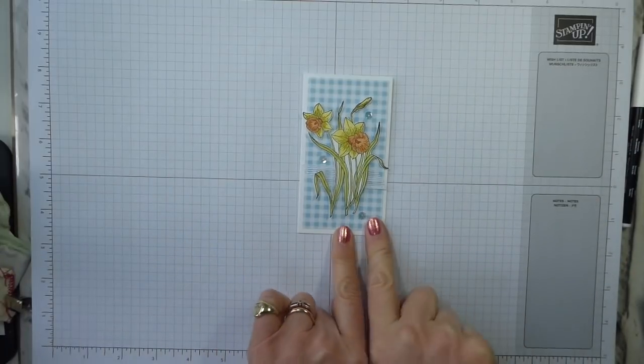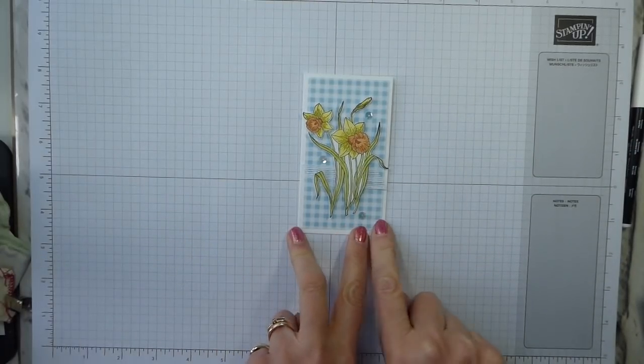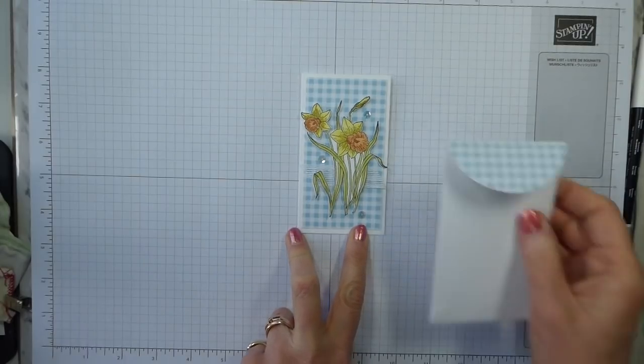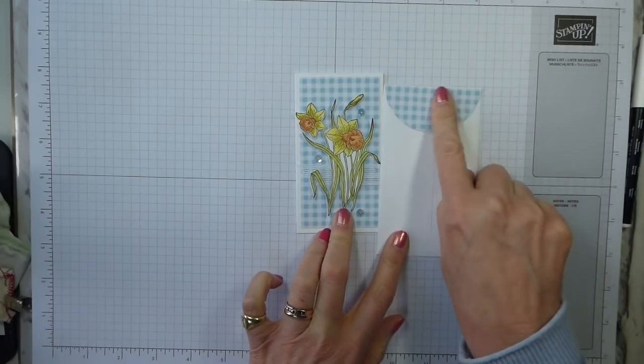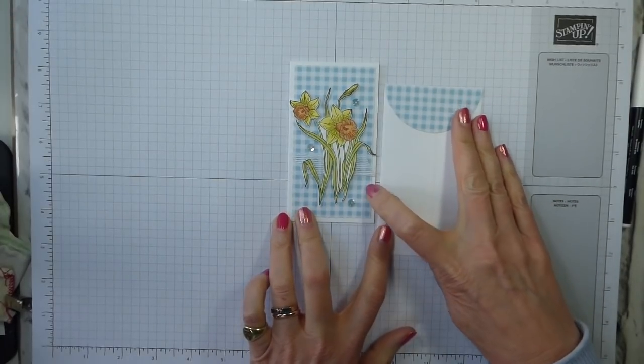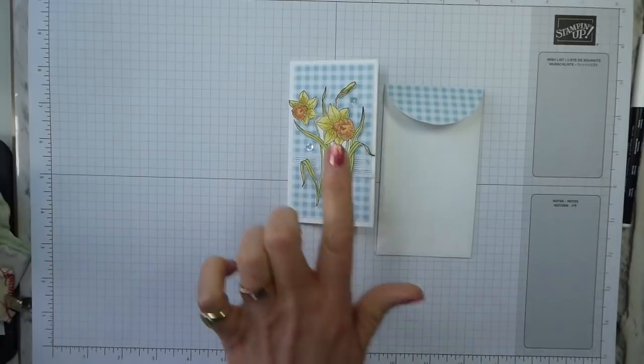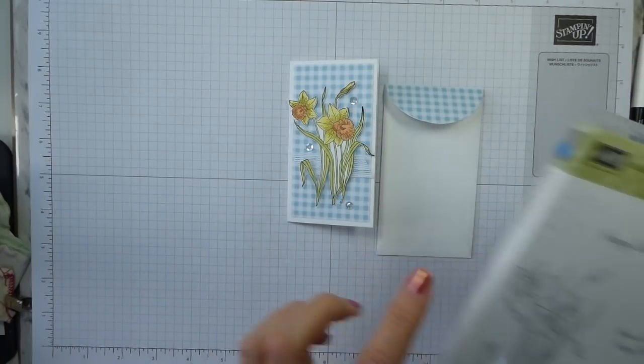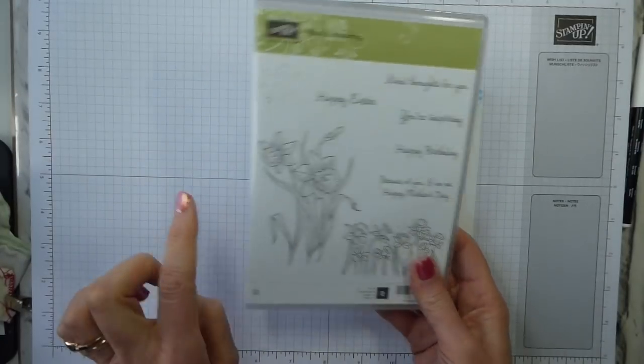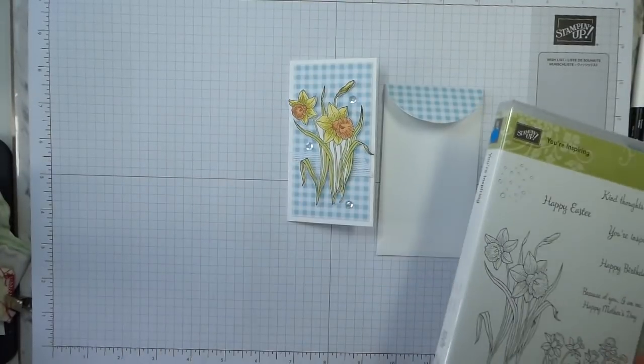So this uses one of our really cute little narrow note cards and envelopes and I've also done the envelope. I've put the patterned paper on the envelope as well. So this uses the Gingham Gala patterned paper and I've used one of the stamps from the Your Inspiring stamp set. This just fits beautifully on the front of the card.